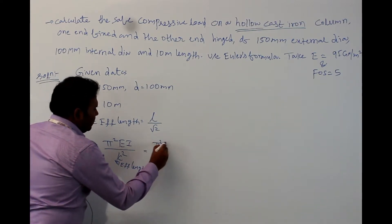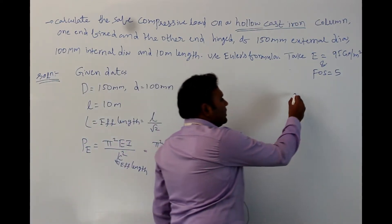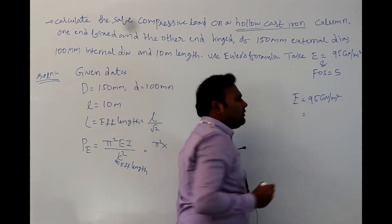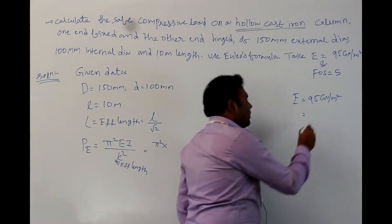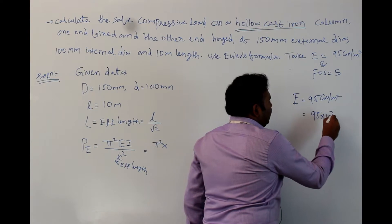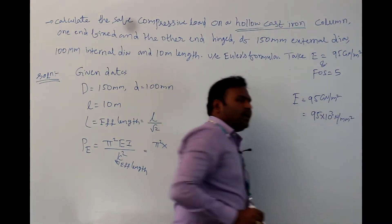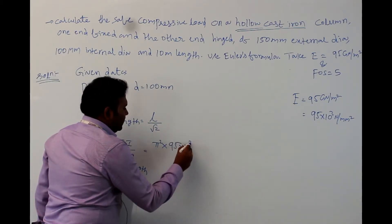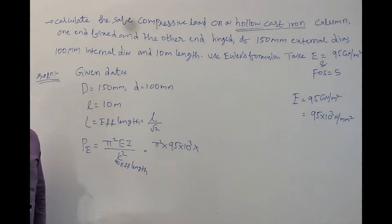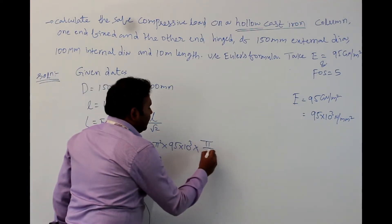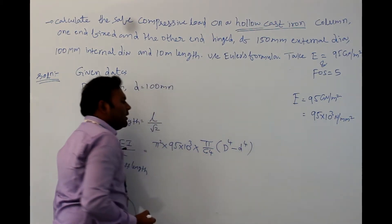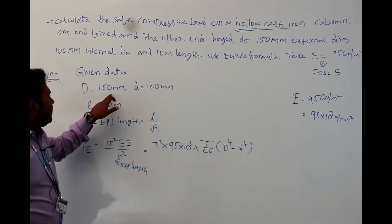This is effective length. Therefore, pi square into, E value is already given in the question. E value is given as 95 giga newton per meter square or 95 into 10 cube newton per mm square. Both are one and the same. So, now we can substitute the value here. 95 into 10 cube into, I is nothing but moment of inertia. For a hollow cast iron column, moment of inertia is pi by 64 into capital D power 4 minus small d power 4.